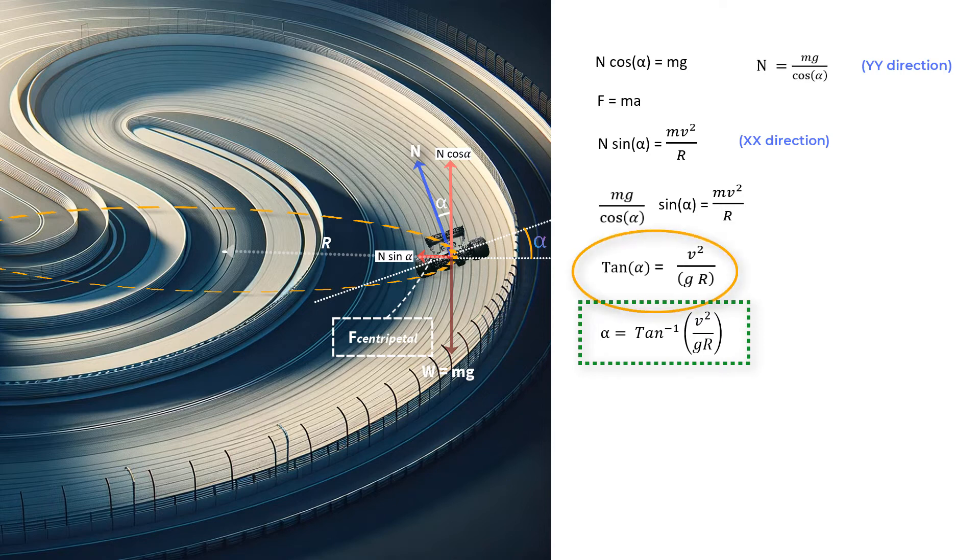Also, you can write velocity V as V equals root of GR times tan α. Now, what I have seen is that students often interpret these equations incorrectly. So this is the way you should understand these equations.